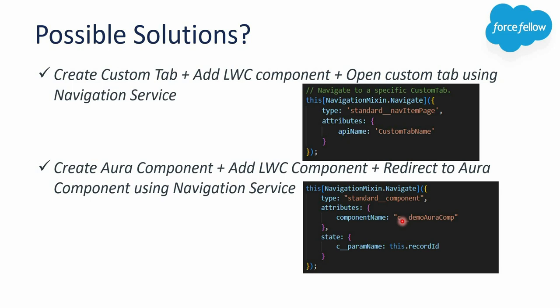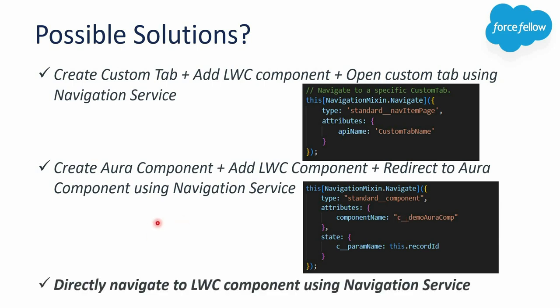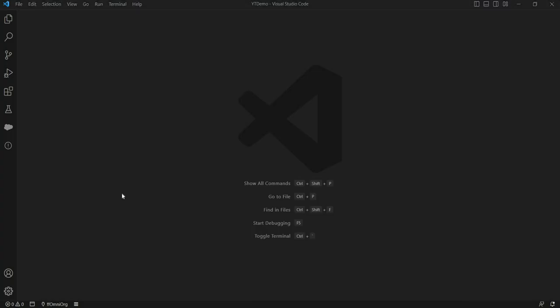In this second approach we also have to create an additional Aura component, which we obviously don't prefer just for redirection. So if you don't want to create any additional component, you can use the third approach to redirect directly to an LWC component using navigation services. Even though LWC components are not URL addressable, we still have a way to achieve this. We'll see it today practically. We need two LWC components — first will contain the text box and button, and second is where we redirect. Let's create the first component named navigation button.